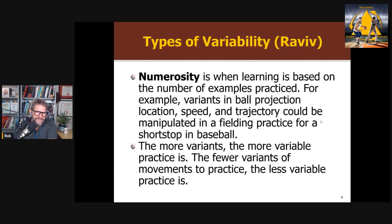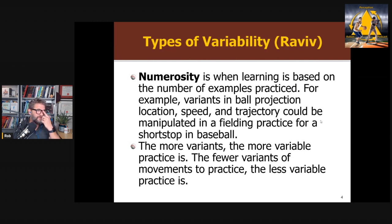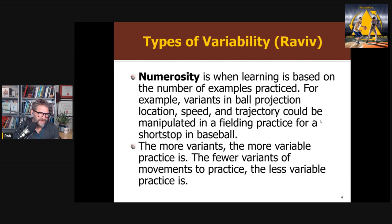They also look at types of variability, identifying four different types based on work by Ravi. Numerosity is when learning is based on the number of examples in practice. So in batting practice in baseball, we could vary projection speed, location, and trajectory. The more variants we add, the more variable the practice. Five different speeds, five angles, and five trajectories would be high variability versus only two of each.